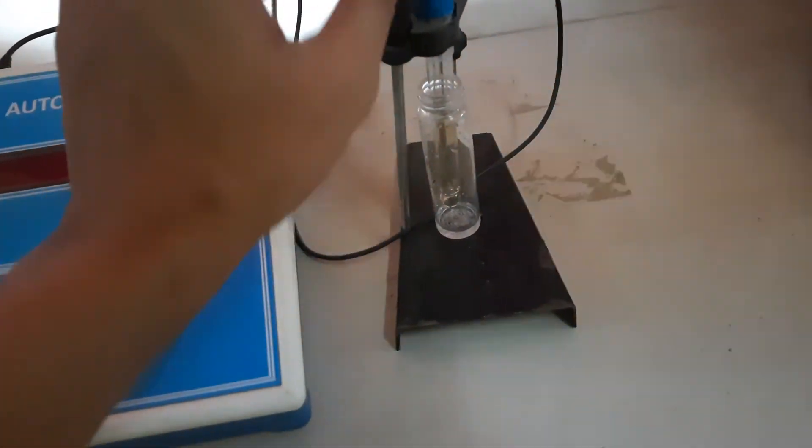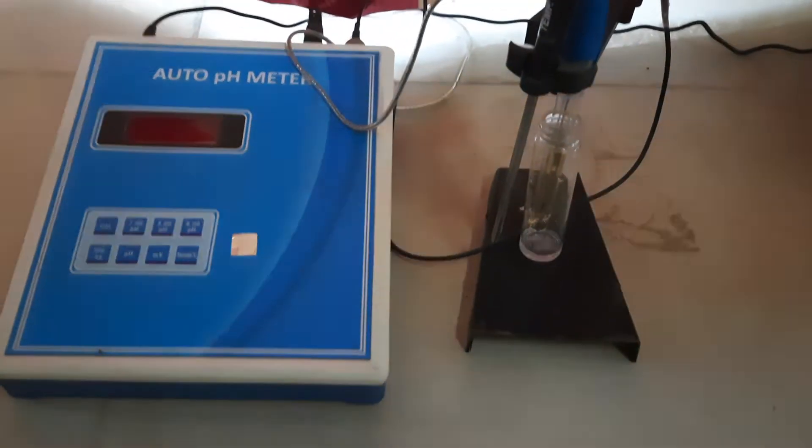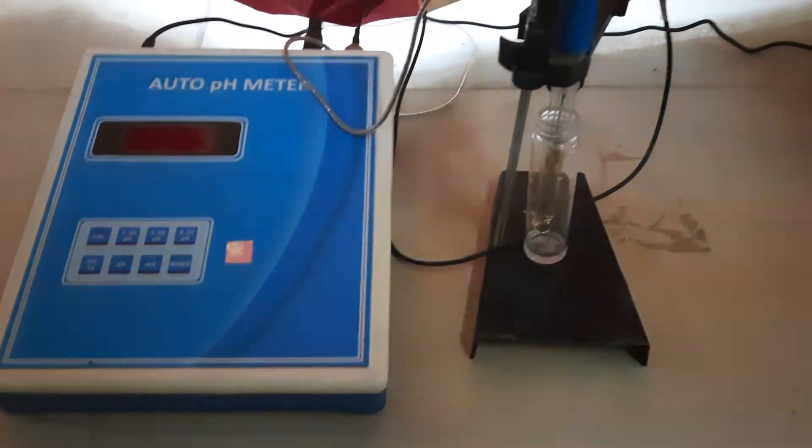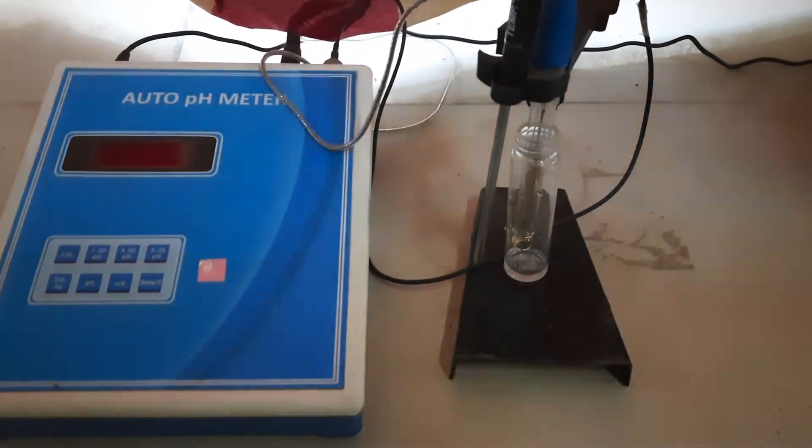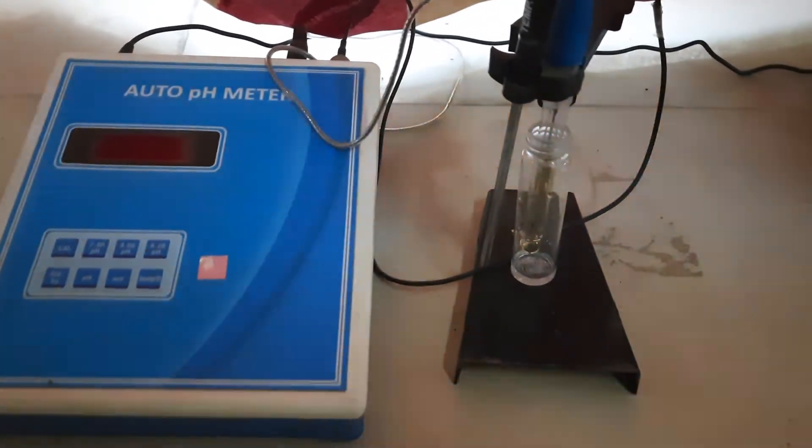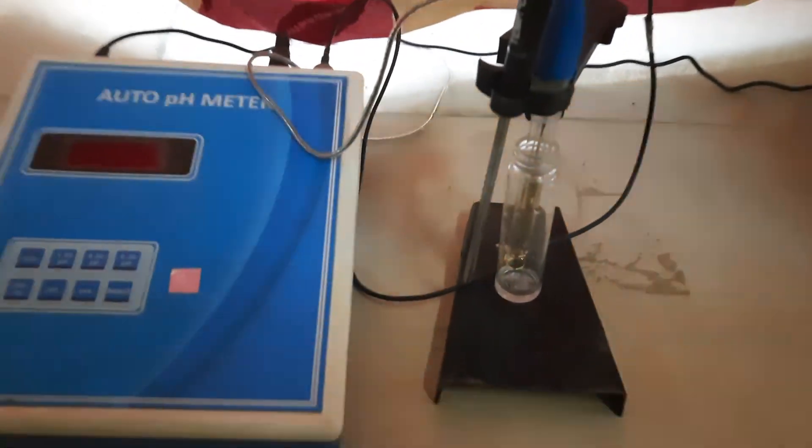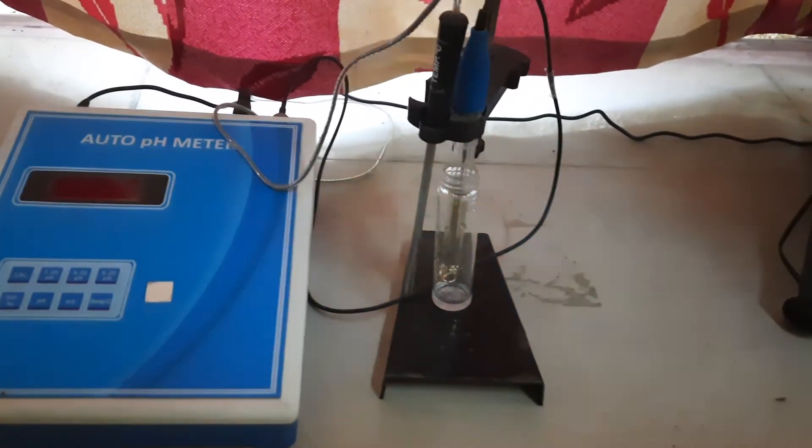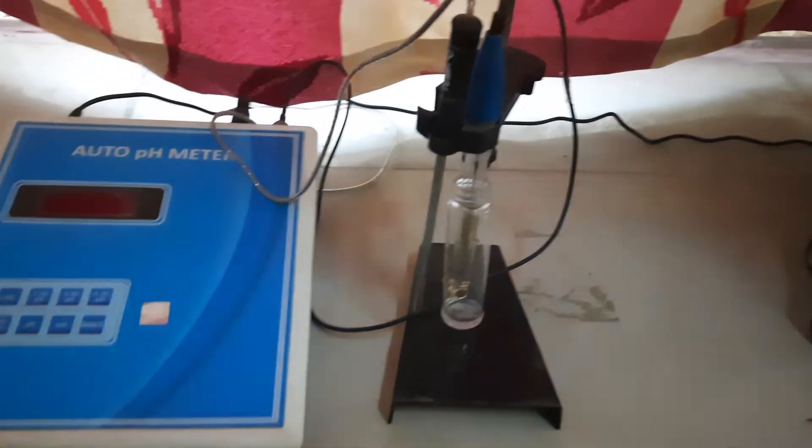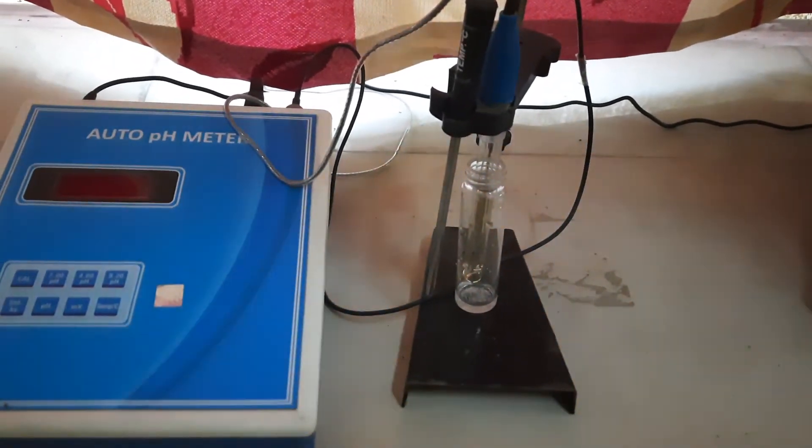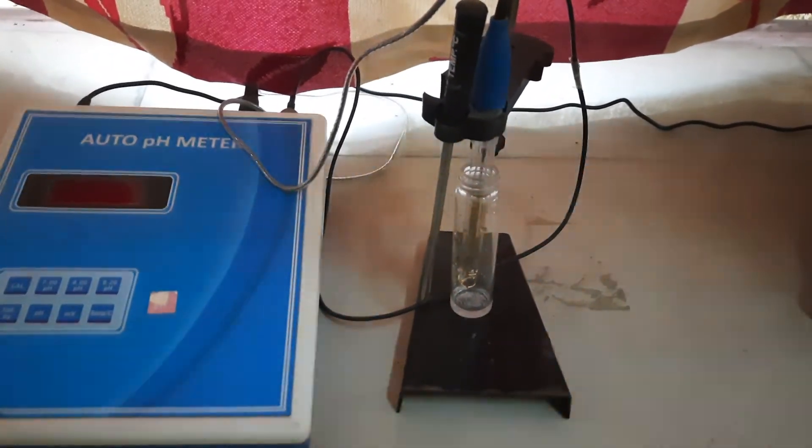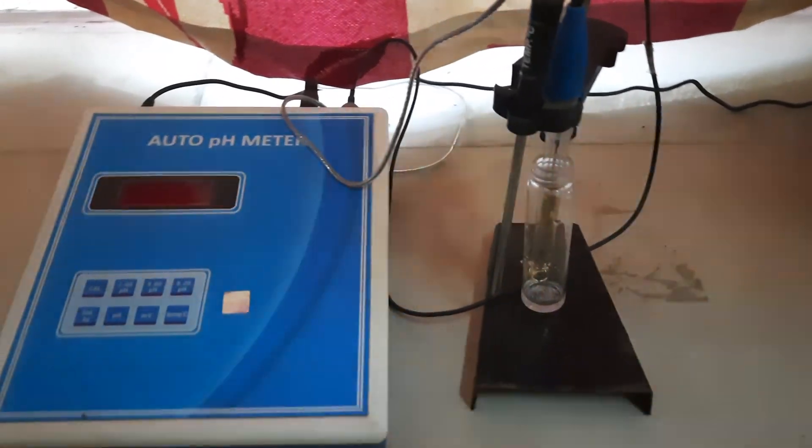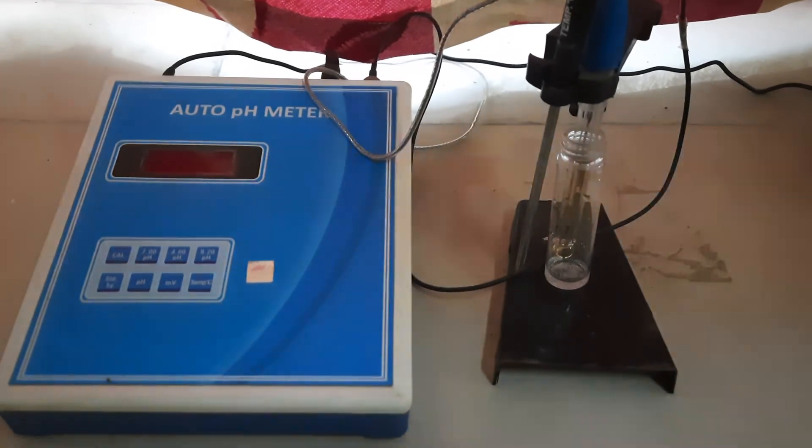This pH electrode is generally made up of glass. The electrode we have right now uses mercury-mercury chloride; sometimes we use silver-silver chloride also. This is the pH meter by which we are going to measure the pH of the buffer solutions we have prepared. Thank you.